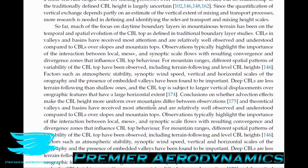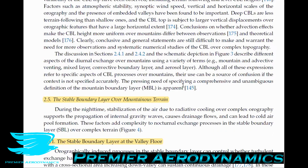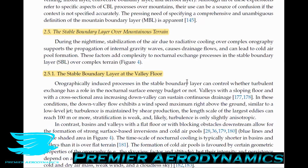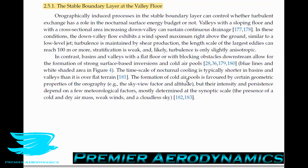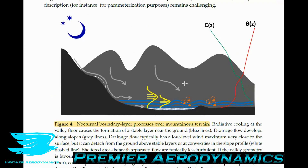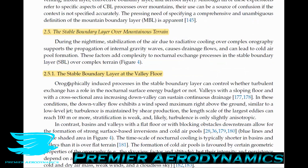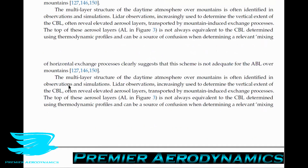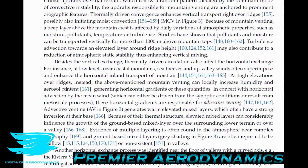That's the end of the unsteady part of the boundary layer. Let's now move on to the stable boundary layer over mountainous terrain — over a valley floor for example — and also look at figure three first before we get to figure four.